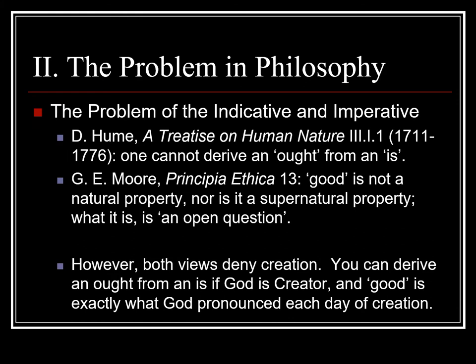Let me suggest two authors: one from the 1700s and one from the early 20th century. David Hume, the empiricist philosopher of Scotland, in his Treatise on Human Nature, argued one cannot derive an 'ought' from an 'is.' You can't say here's what is and therefore this is what you ought to do. He denied the connection philosophically between cause and effect. In ethics, this can be posed as trying to derive an 'ought' from an 'is' — from the indicative 'is,' you try to derive an imperative 'ought.' G.E. Moore, in his Principia Ethica, also rejected the idea of natural law, saying that good is not a natural property nor a supernatural property — it's an open question.